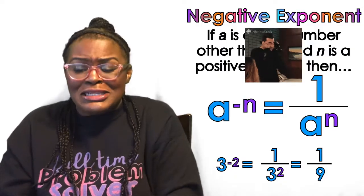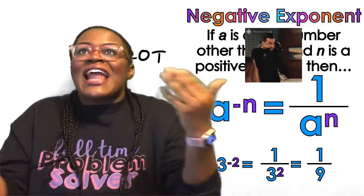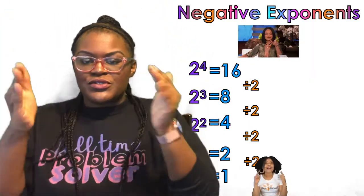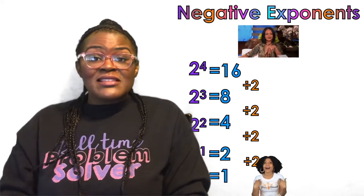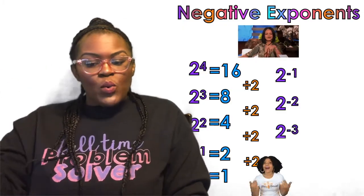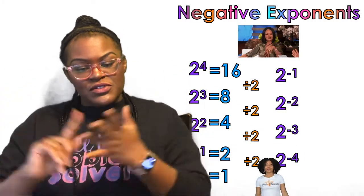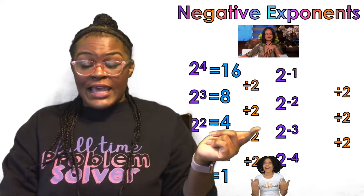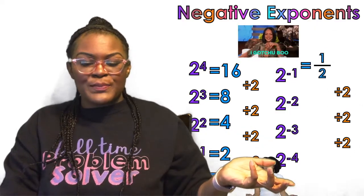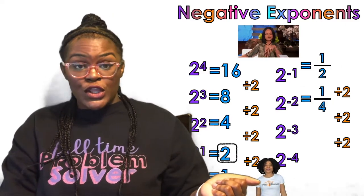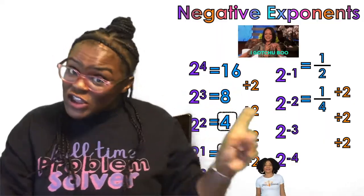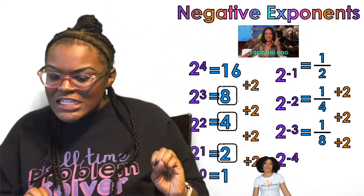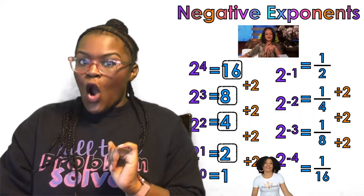Again, I love it when you ask questions I'm prepared to answer. We already did: two to the fourth, two to the third, two squared, two to the first, two to the zero. Now I need to finish the pattern — two to the negative one, two to the negative two, two to the negative three, two to the negative four. My pattern is dividing by two: take that 1, divide by 2, get one half. Take one half, divide by 2, get one fourth. Take one fourth, divide by 2, get one eighth. Then one over 16.